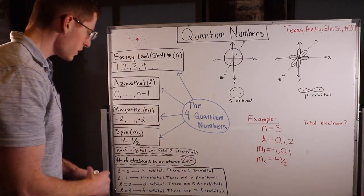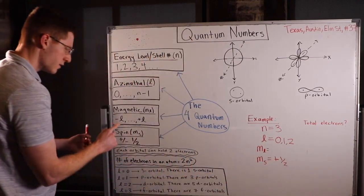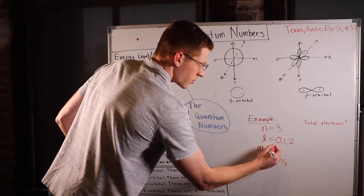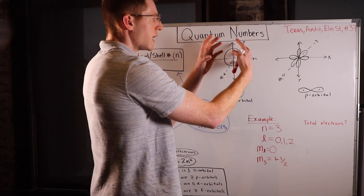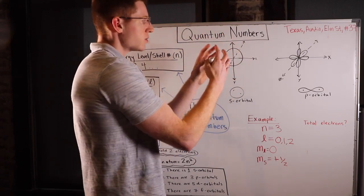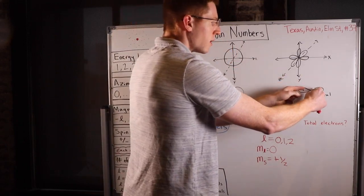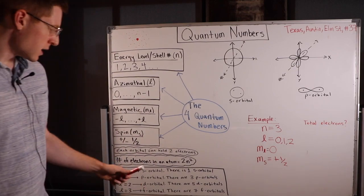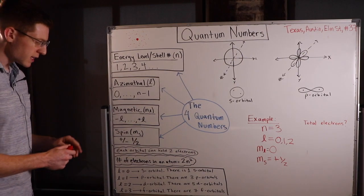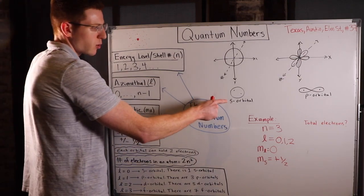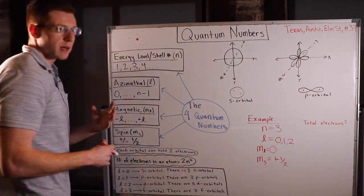If we were to pick L equals 0, that means M sub L would only be 0 — you can't have a negative 0 and a positive 0. So M sub L would be 0, meaning we're at an s orbital, and there's only one s orbital. That makes sense because an s orbital is just a sphere. You can't orient a sphere in two different ways — you have one way to put a sphere down. It's not like a dumbbell where you can rotate it and make it look different.